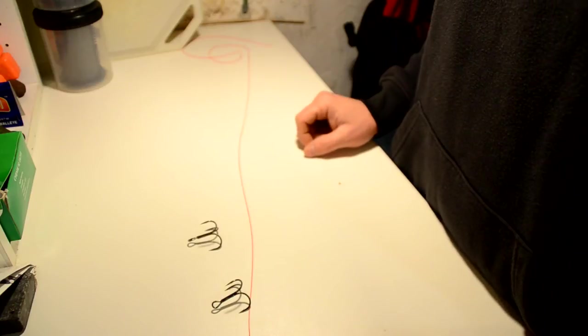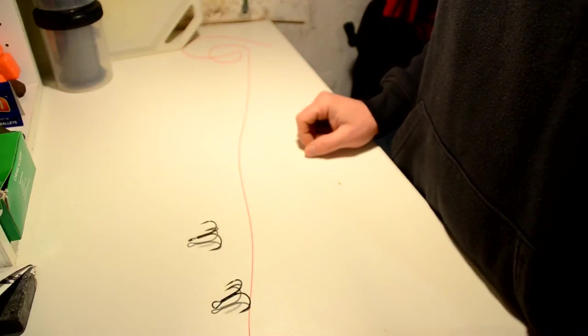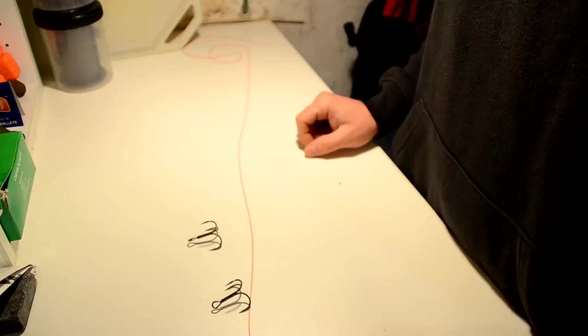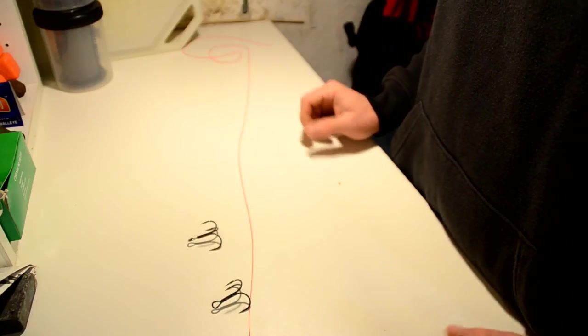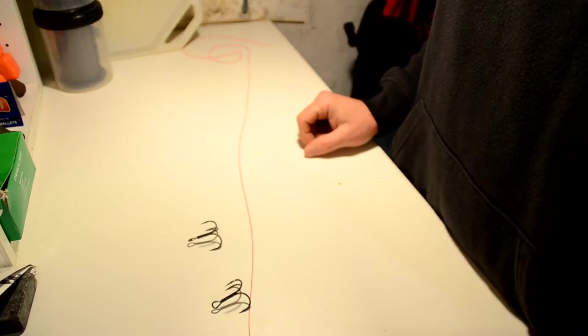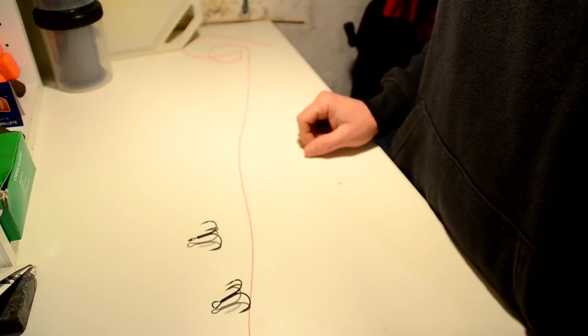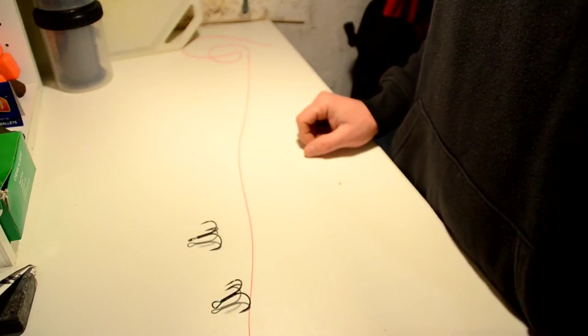If sander, I go to a smaller hook. If pike, I go to bigger hooks. Bigger bait fish, bigger hooks. Normally sander is size 8 owners ST-36s. If I have big roach for pike, I'll go to a size 6 or even a size 4.